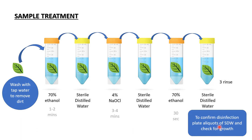To confirm that disinfection was successful, you can plate an aliquot of the last sterile distilled water used for rinsing. If you still get growth, that means the surface sterilization was not done properly. The aliquot of the last wash water should show no growth on your media plate.